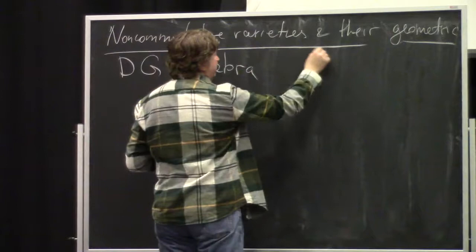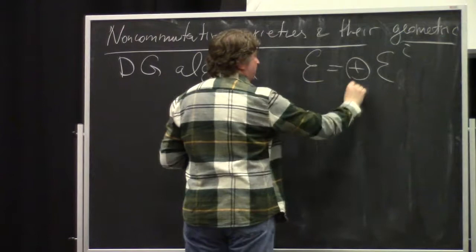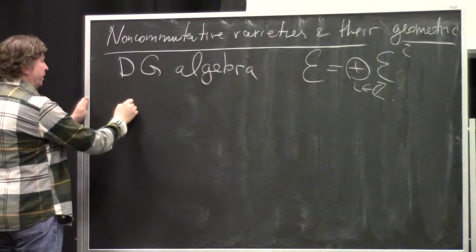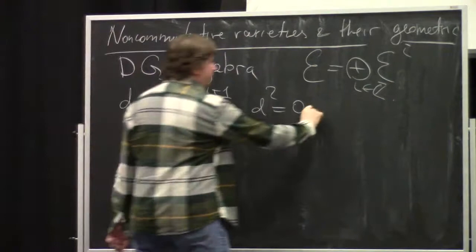A differential graded algebra is a graded algebra E equal to the direct sum over all i, and of course we also have a differential whose square is zero, called the Leibniz rule.